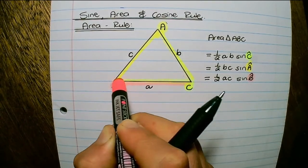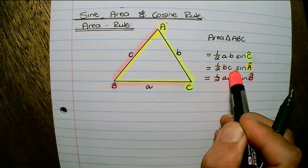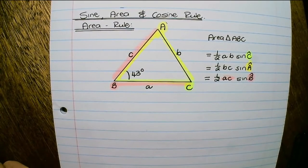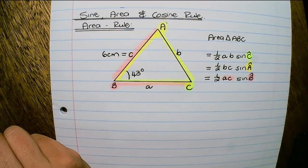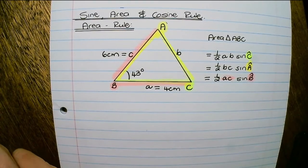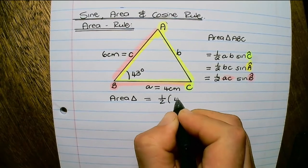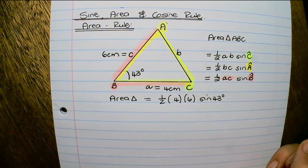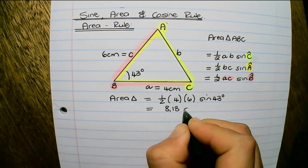Angle B is given as 43 degrees, the length of AB is 6 cm, and the length of BC is given as 4 cm. Then the area of this triangle would be a half times 4 times 6 times sine of 43 degrees. Putting these values into a calculator, the area is 8.18 cm squared.